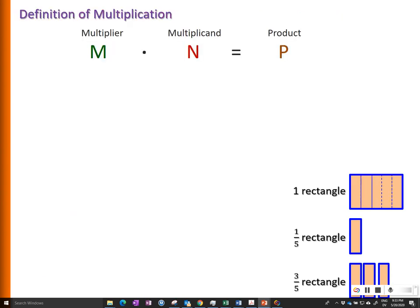Let's connect this to the definition of multiplication. We can understand multiplication as a product of a multiplier and multiplicand. The multiplier refers to the number of groups and the multiplicand refers to the number of units in each group. The product is the total number of units in all the M groups.